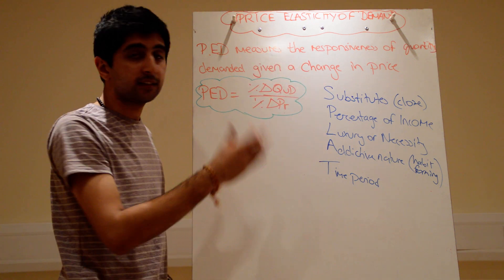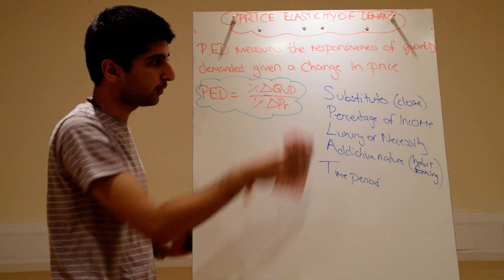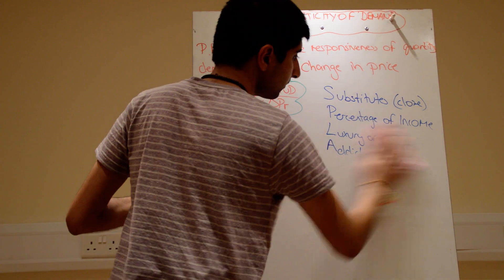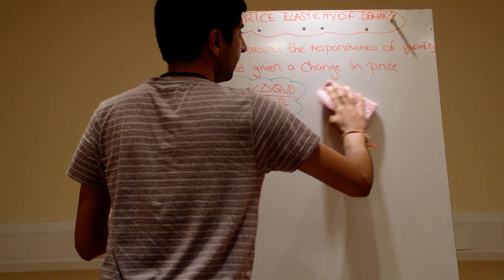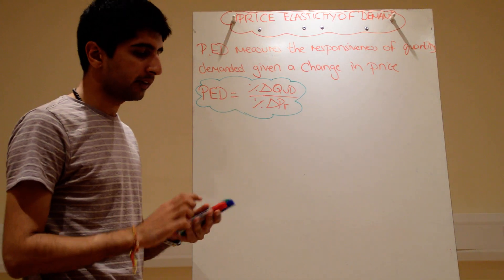So these are all the factors that determine elasticity of demand for specific types of goods. Learn those from SPLAT. And the last thing in this topic is the link between elasticity of demand and revenue.